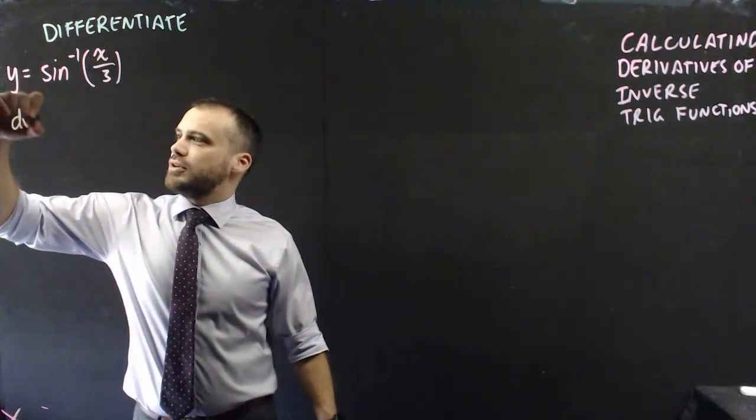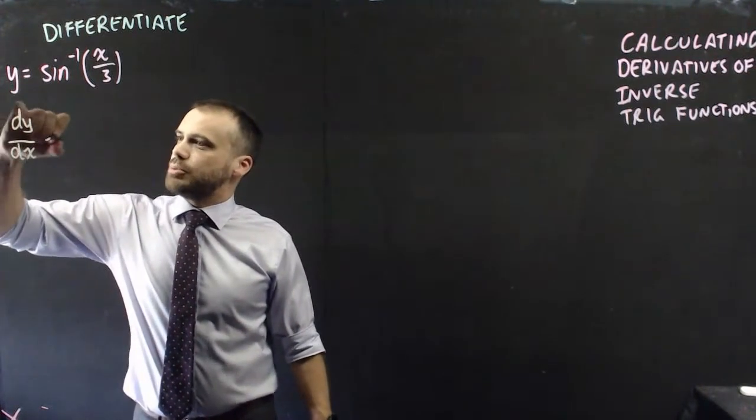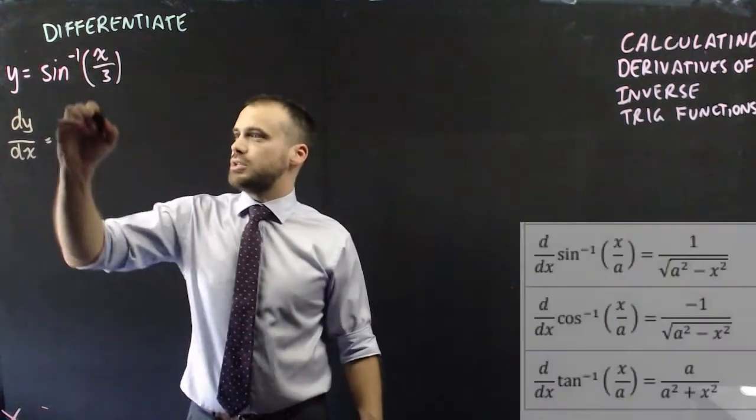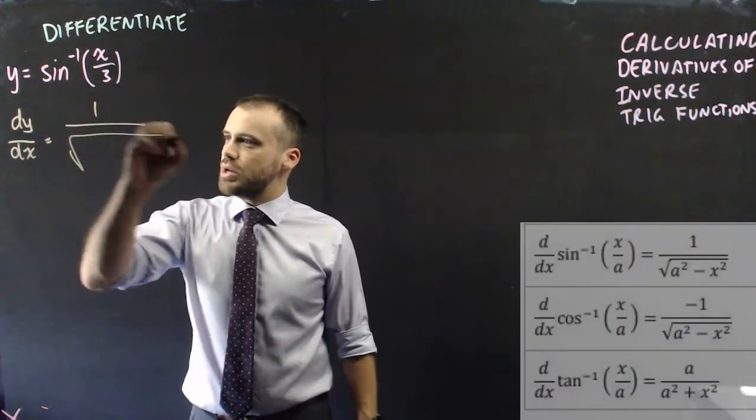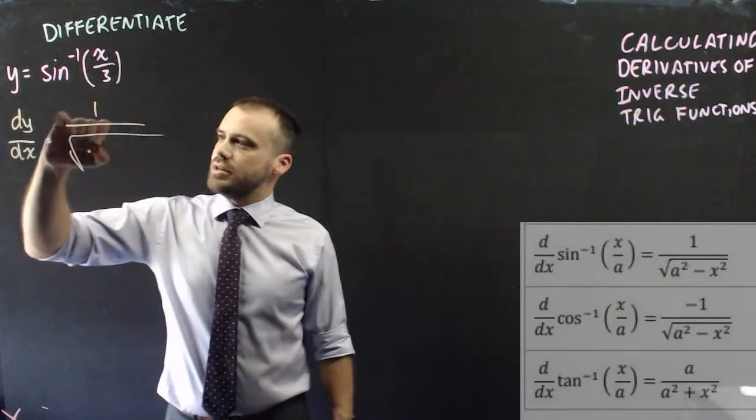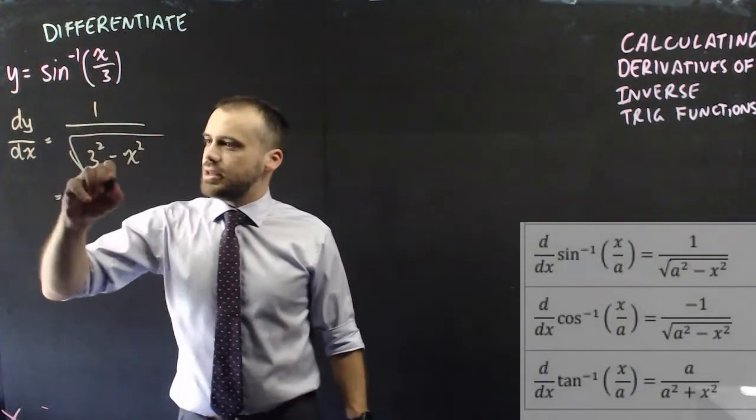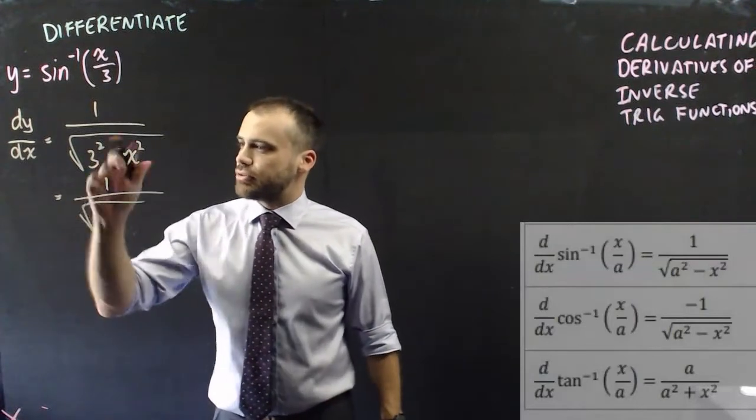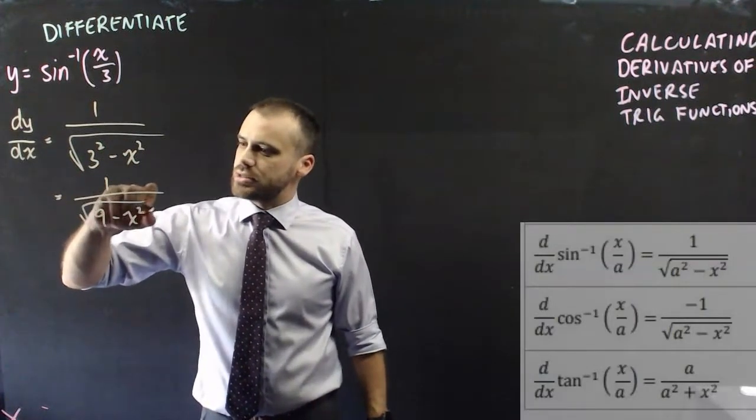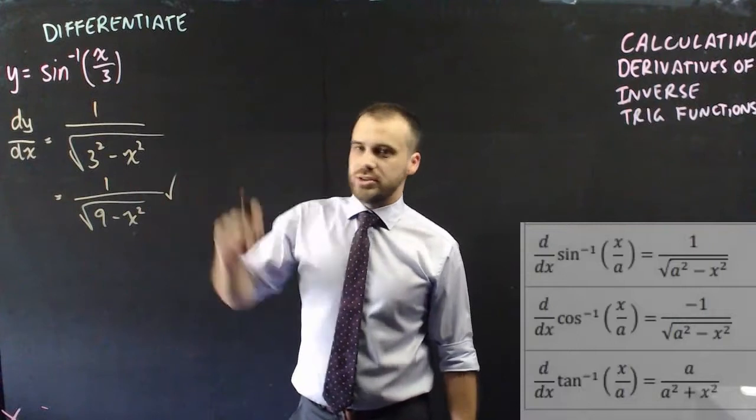First one here, the derivative of y with respect to x will be equal to, look at your formula sheet, it's going to be 1 over the square root of a squared minus x squared, and then neaten it up, square root, 3 squared is 9, 9 minus x squared, that is your answer.